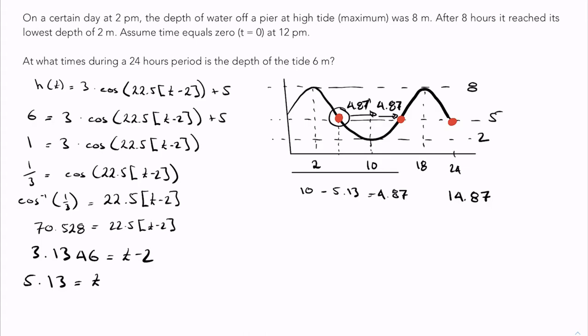Where else? We have another point over here. Which when you think about it, it's just this point shifted over by the length of one cycle, which is 16 units. So I'm going to have 5.13 plus 16, which gives me 21.13.